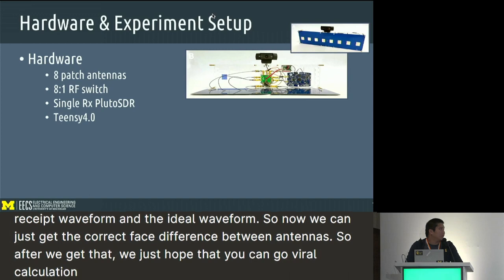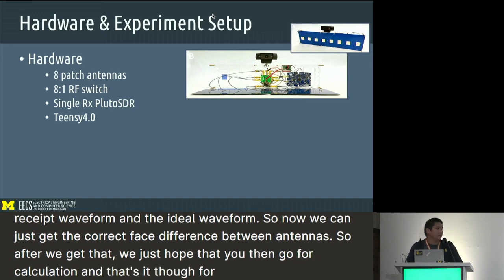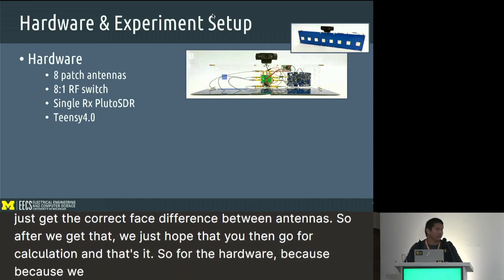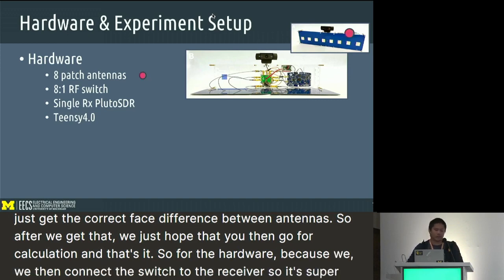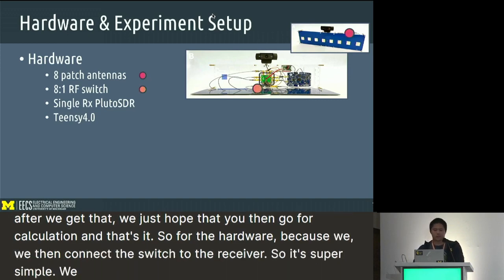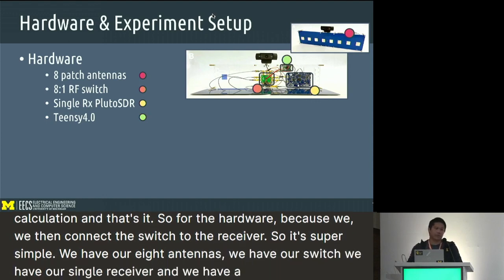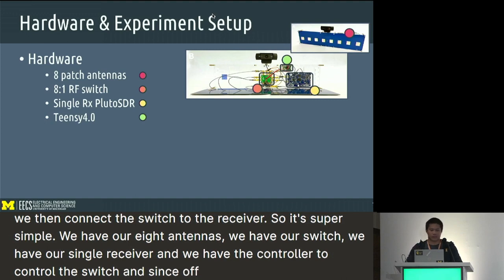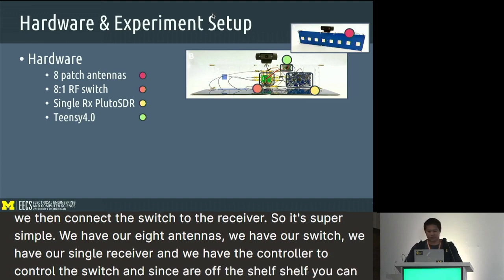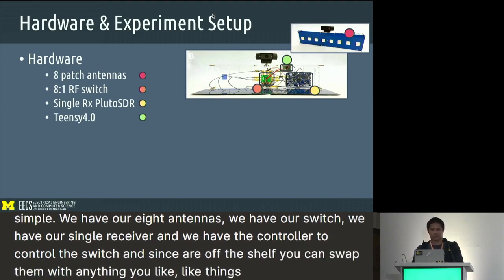For the hardware, because we don't connect the switch to the receiver, it's super simple. We have eight patch antennas, a switch, a single receiver, and a controller to control the switch. Since they're all off-the-shelf components, you can swap them with anything you like — swap the microcontroller with an Arduino, or swap the SDR with any receiver you prefer.